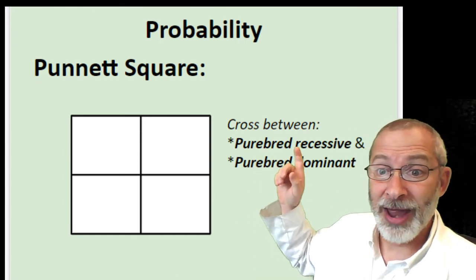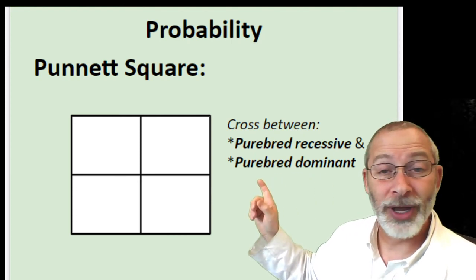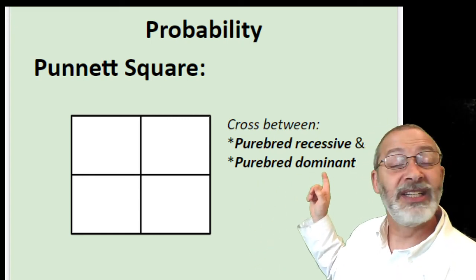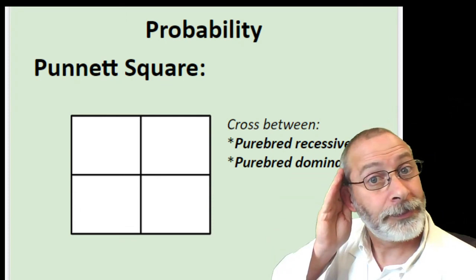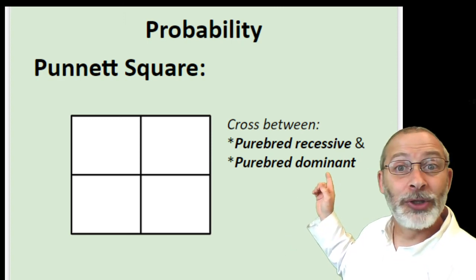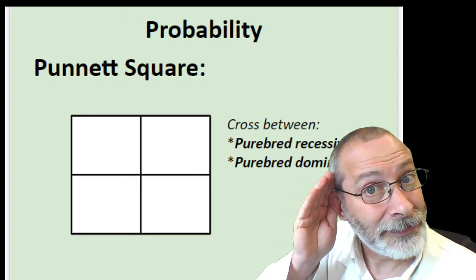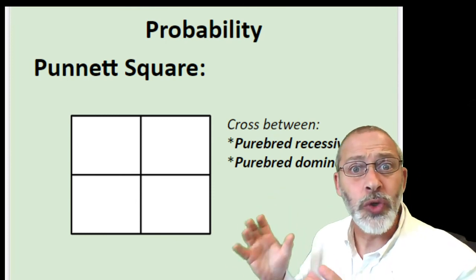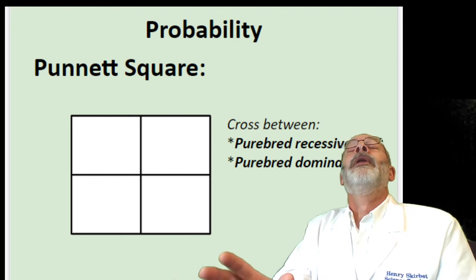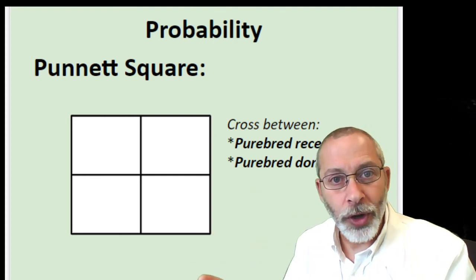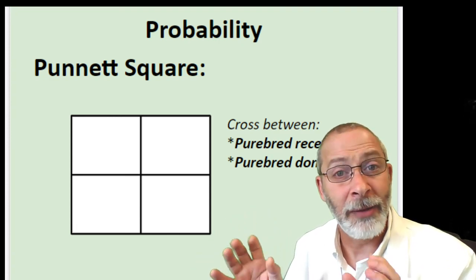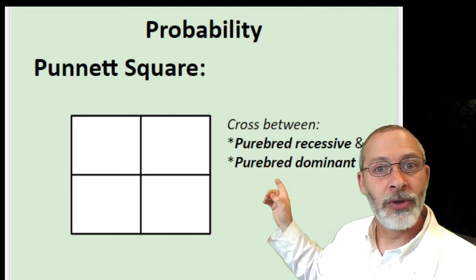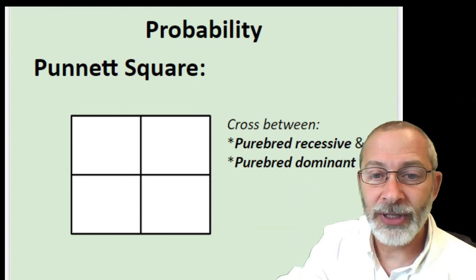Now we're going to cross that parent with a purebred dominant. Purebred is the same — homozygous means both the same trait or characteristic. So we've got a homozygous recessive — two lowercase letters — and a homozygous dominant — two capital letters.